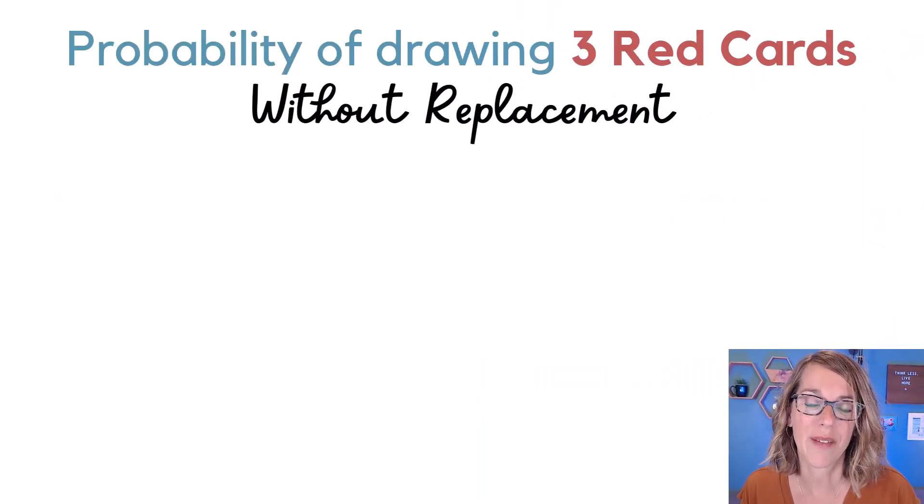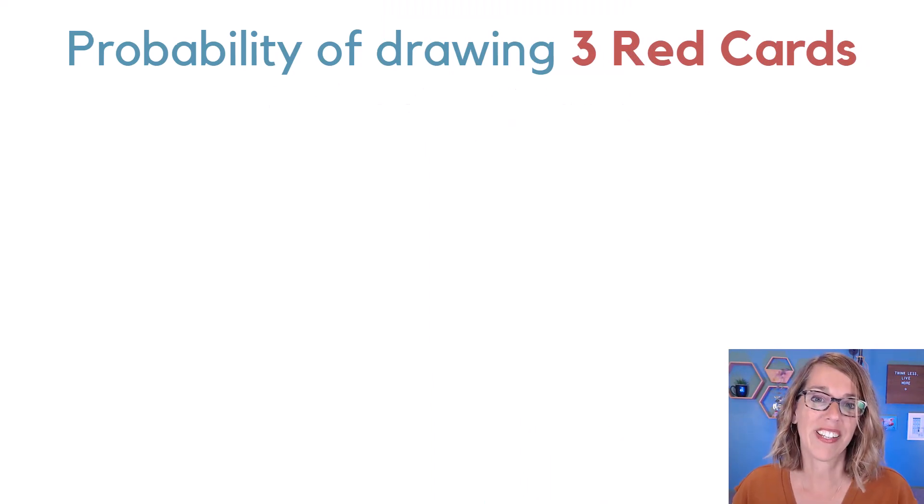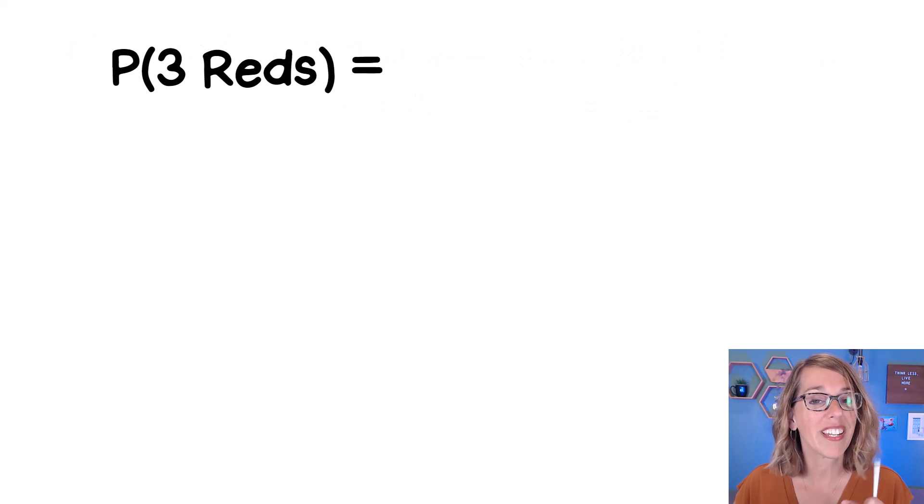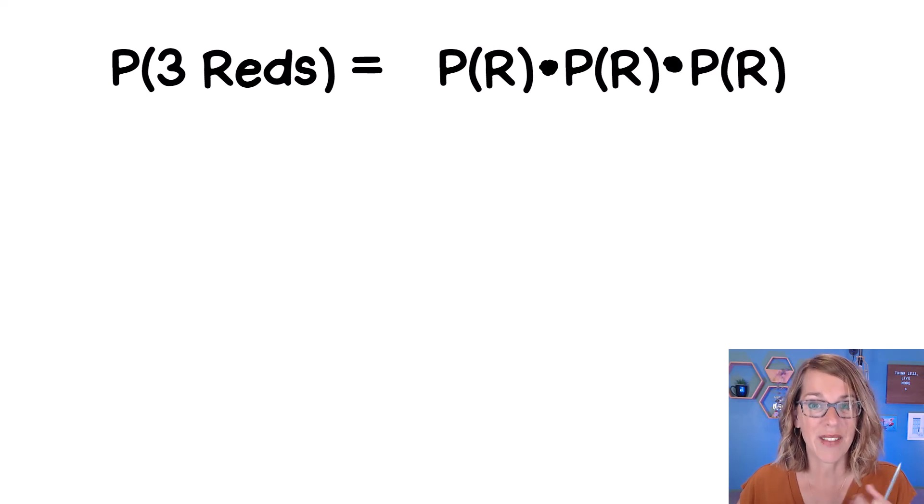Let's look at another example. This time we're going to be drawing three red cards again without replacement. As I'm putting the probability together, it's going to be the probability of three reds or the probability of a red times a red and then times the other red. These are supposed to be multiplication symbols. I know they look a little bit fuzzy. We're going to do the probability of that very first red.